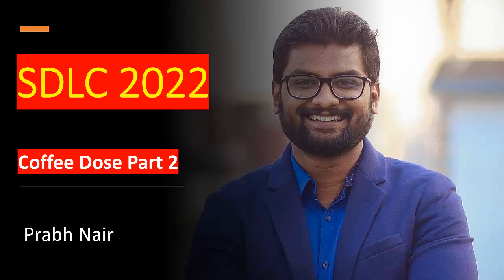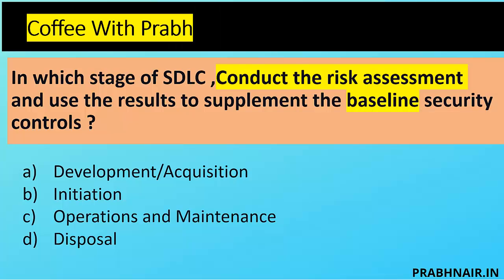Let's start with the first question — the first coffee shot. In which stage of the SDLC do we conduct a risk assessment and use the result to supplement the baseline security control? The question mentions using results to supplement baseline security controls, which changes the answer. Operation and Maintenance is removed; initiation only does risk assessment. Control implementation comes in Development and Acquisition — that's where the answer is A.